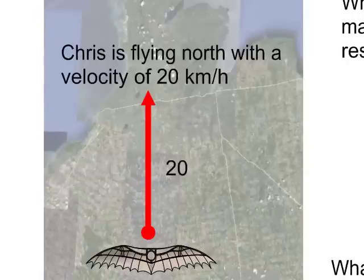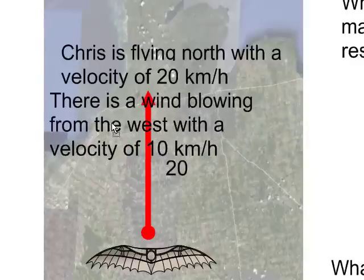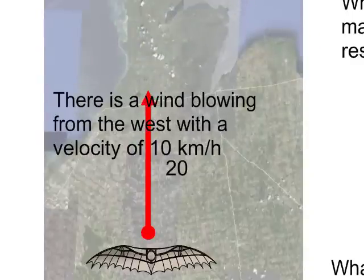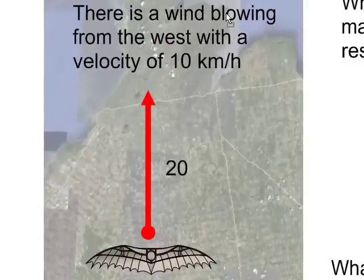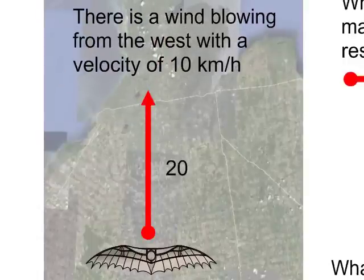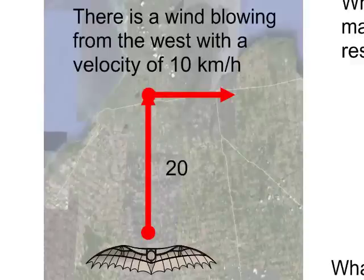Now, what's going to happen if there's a wind blowing? How do we deal with that when we're using vectors? We're going to say there's a wind blowing from the west with a velocity of 10 kilometers per hour. So we know that Chris is actually going to get blown to the east at the rate of about 10 kilometers per hour. There we go. We've got two vectors.